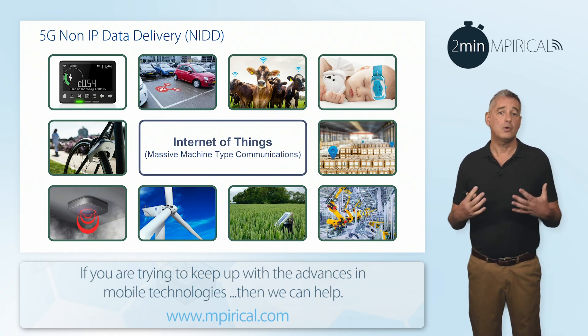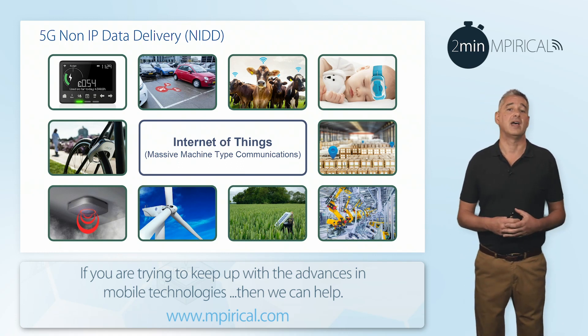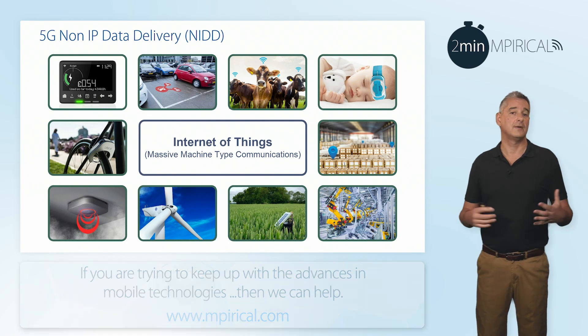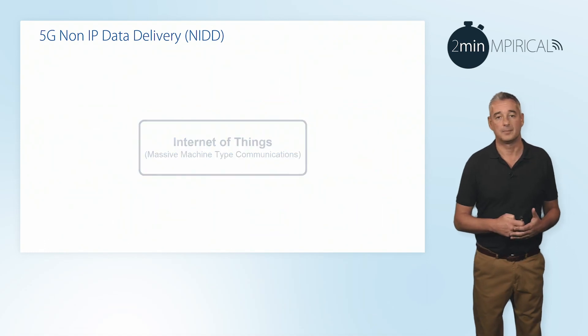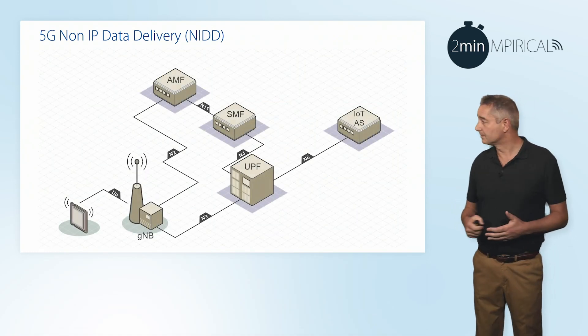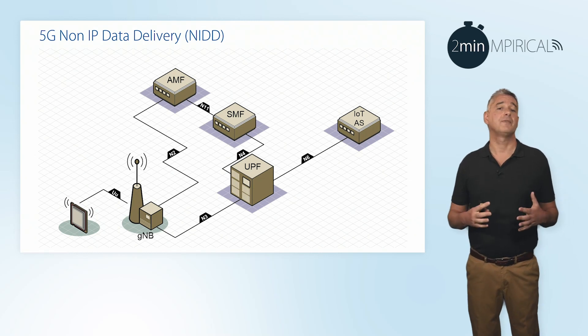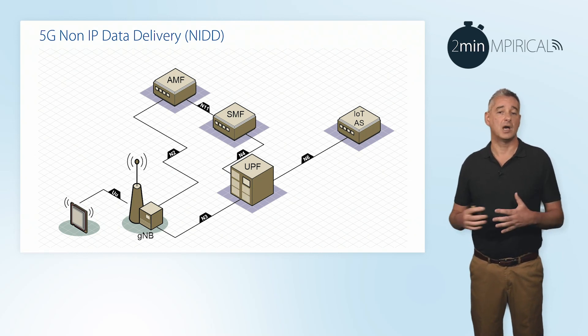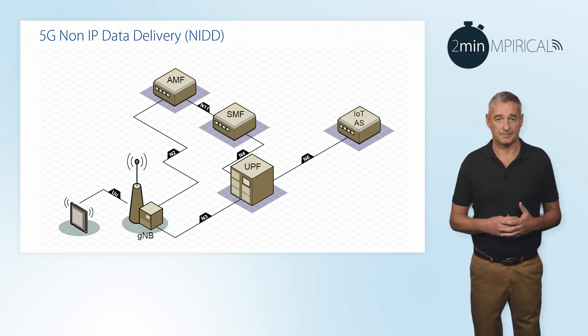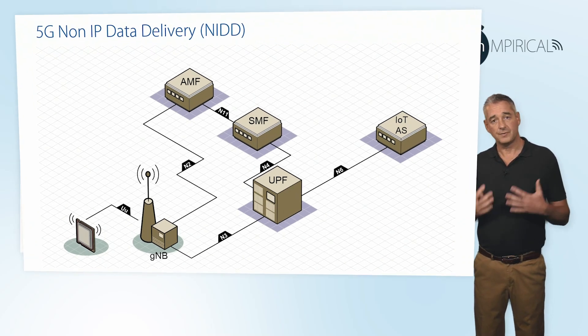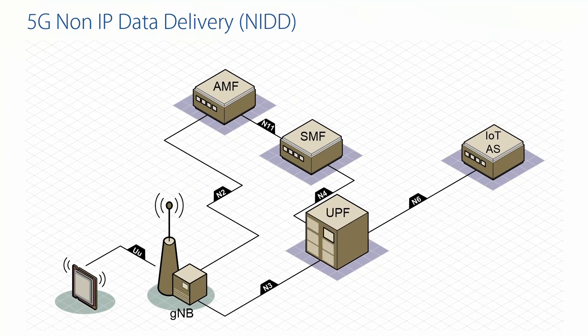So how can we support this then across a 5G network? We can see on the diagram a simplified 5G architecture. As far as carrying non-IP traffic across the system, we have two fundamental options.